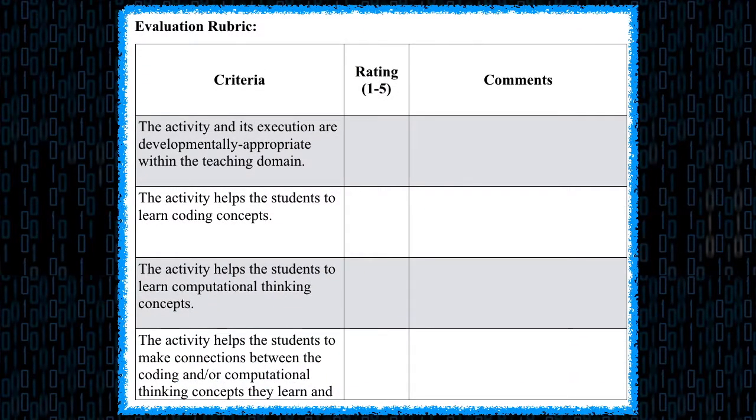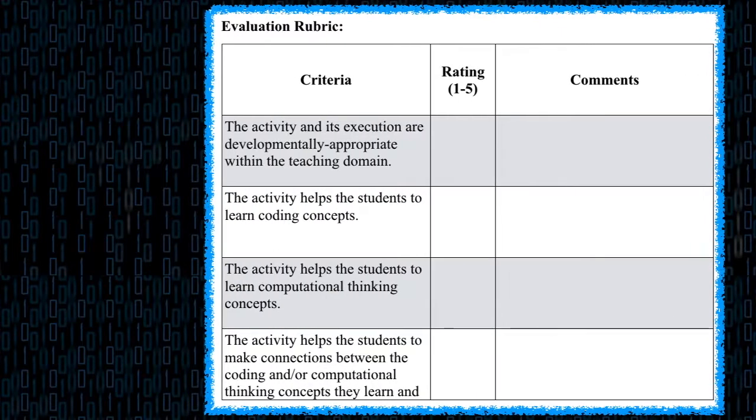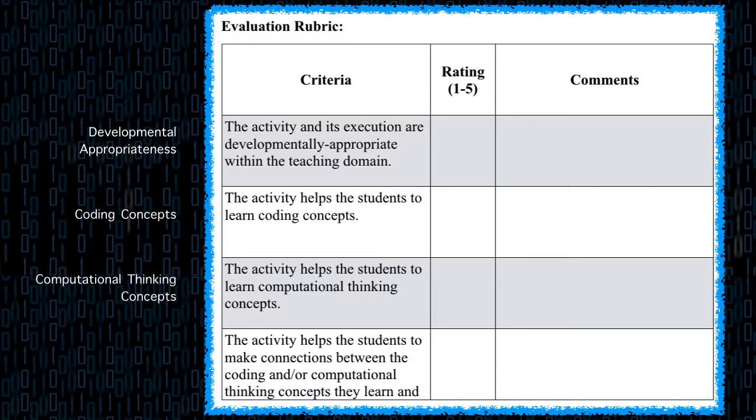I'm going to start by getting the essentials of the criteria on the rubric in my head. I'll need to answer questions about developmental appropriateness, coding concepts, computational thinking concepts, and cross-curricular connections. I'll need to rate each area on a scale of 1 to 5 and write a comment about my assessment.